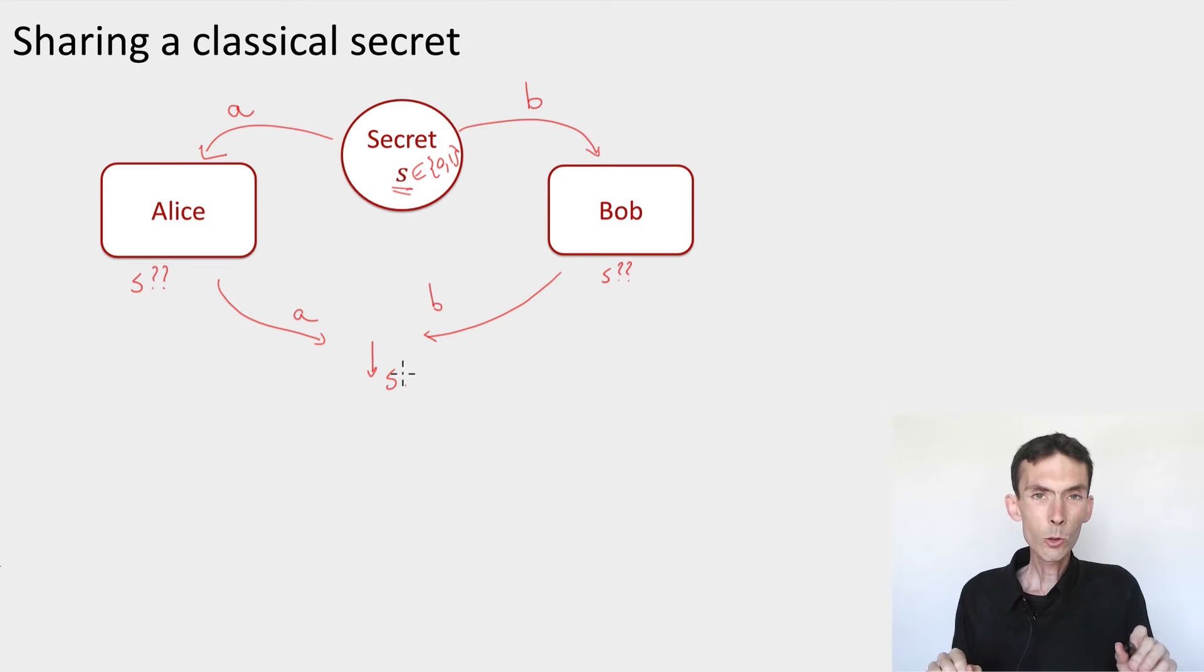So in this way, we've distributed the secret in between Alice and Bob. Each of them has a share, doesn't reveal them any information about the secret, but if you put the shares together, then you recover the secret. So that's why it's called secret sharing. Okay. So now let's pause for a second. How about you think of a scheme that lets you allow this? What's the idea?